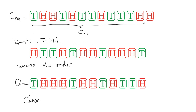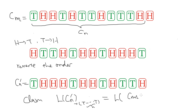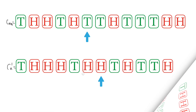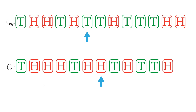So we will play the game on this new sequence cn', and my claim is that the number of operations sending cn' to all tails is the same as the number of operations sending cn+1 to all heads. In this example, there are seven heads in cn', which means we will start at this point indicated by the arrow. What I am going to do next is to play simultaneously on cn' and cn+1. So let's go!